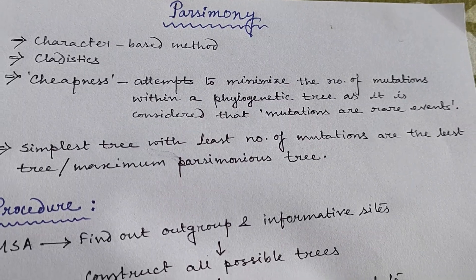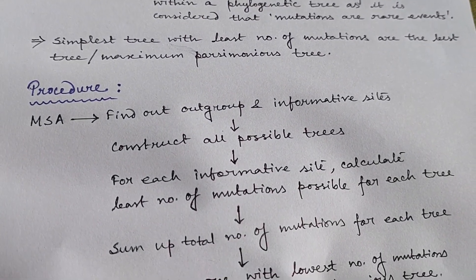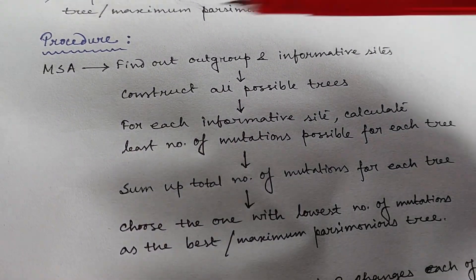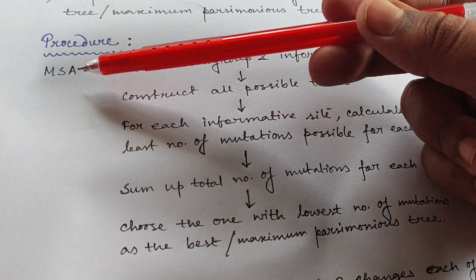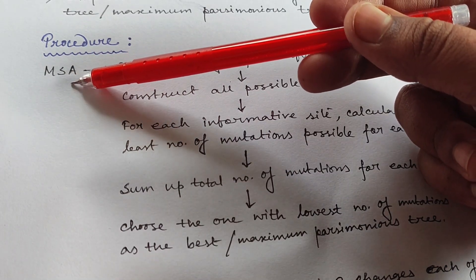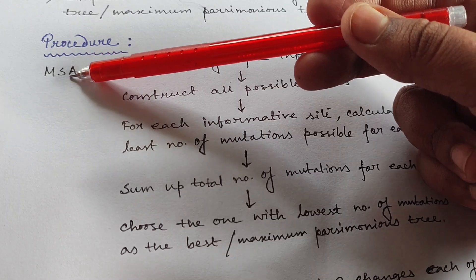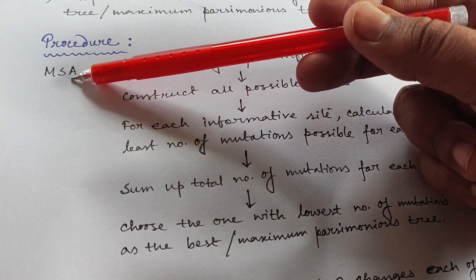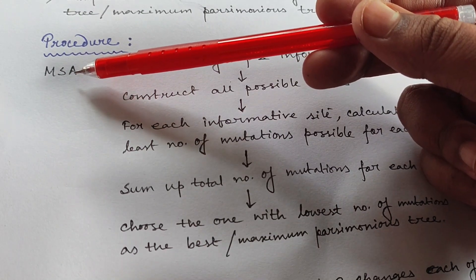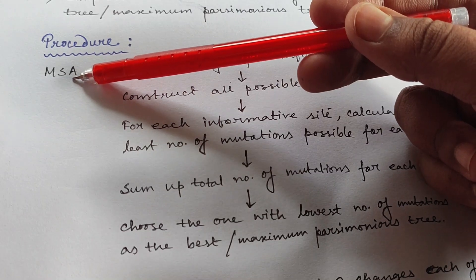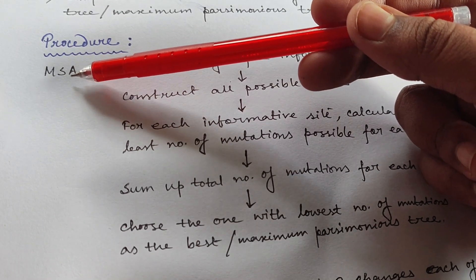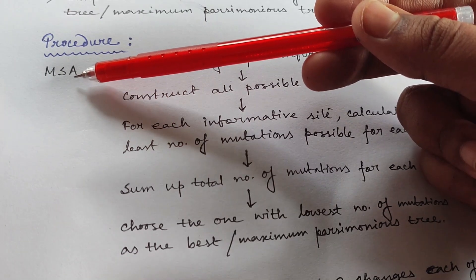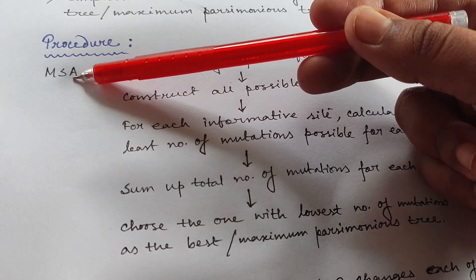Now coming to the procedure. Whenever any sequences are given to you, first of all you have to do multiple sequence alignment — let's say for five sequences which have different start and end positions. You align all the start and end positions of all the sequences in the same line. In your examination, they will already give you multiple sequence-aligned sequences, so you don't need to do this step.